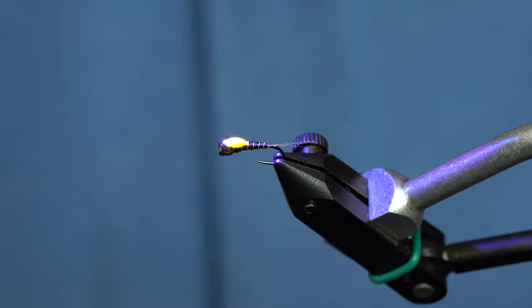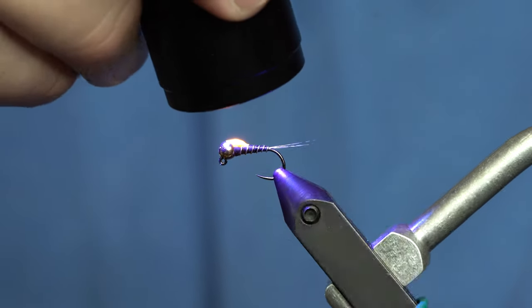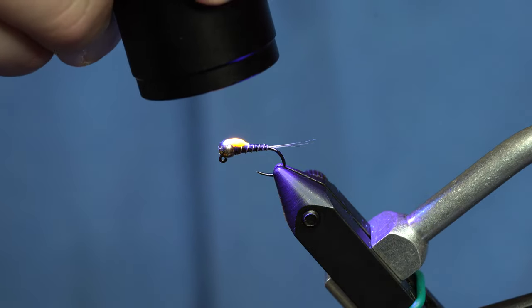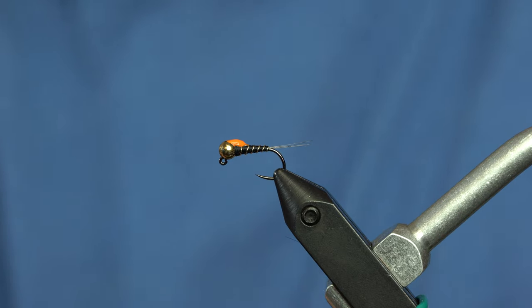From here, we'll just set it with the light, and then as a final step, we'll take some really thin resin and coat the whole fly.